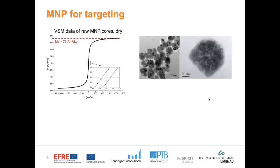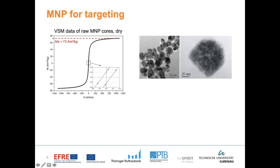Here you can see the results for the uncoated particles. We obtained a magnetization of 73 emu/g, which is a very good value for magnetic targeting. In the zoomed view, we can see very weak coercivity and very weak remanence, which will prevent or hinder the particles from forming agglomerates. And here you can see an image of how the particles look — you see the clusters, and a close-up of a single cluster showing that it consists of several subgrains, or so-called crystallites.